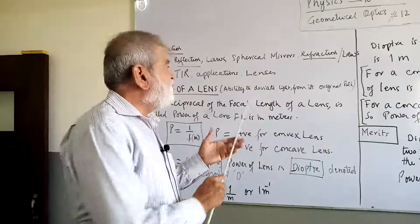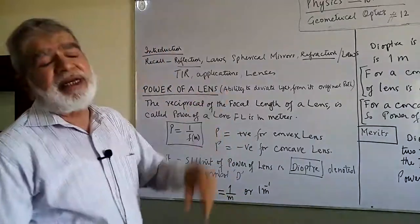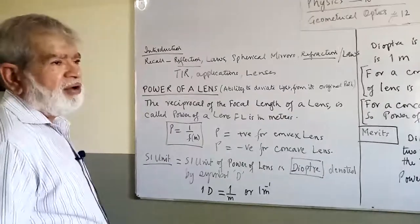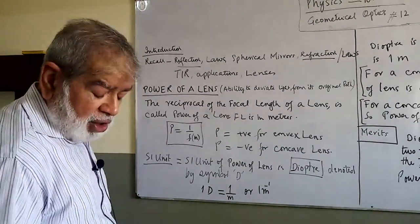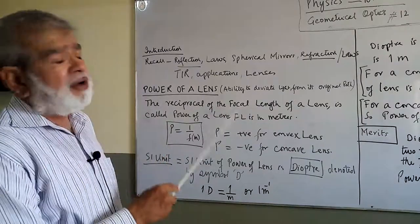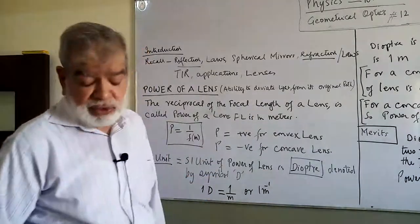The ability of the lens to deviate light is known as the power of a lens. How do you measure it? How do you find it? The other definition of the power of a lens is the reciprocal of the focal length of a lens is known as power of a lens.